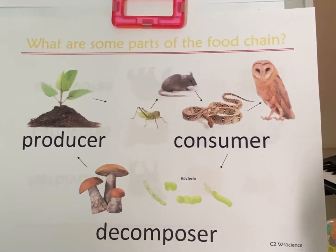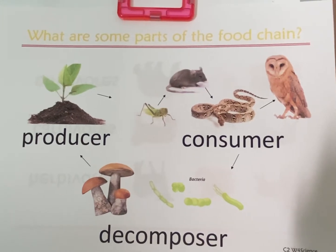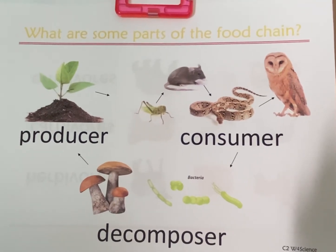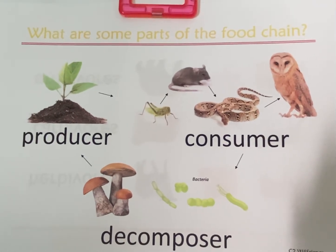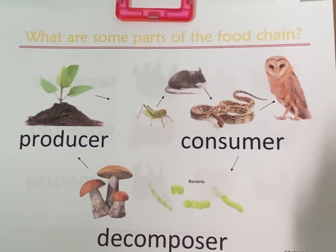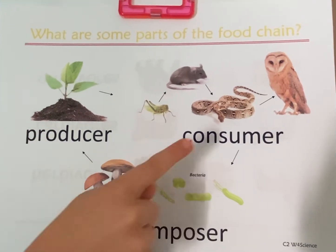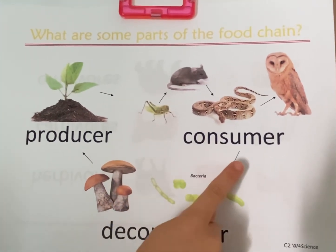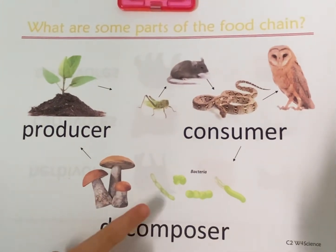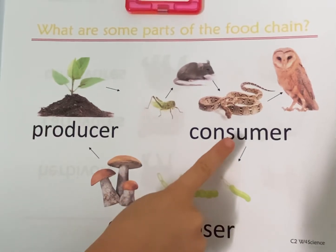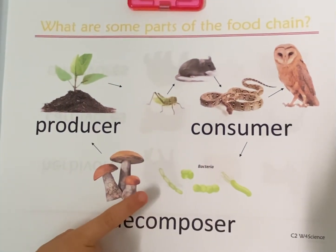What are some parts, parts, parts of the food chain? These are some parts, parts, parts of the food chain. Producer, consumer, and decomposer. Producer, consumer, and decomposer.